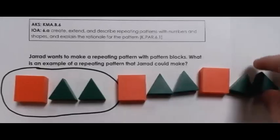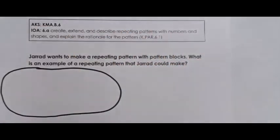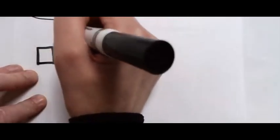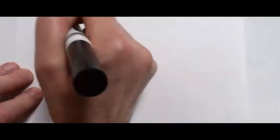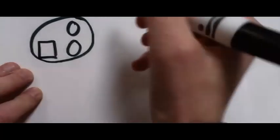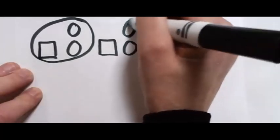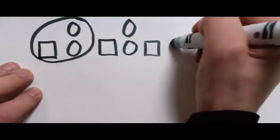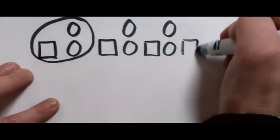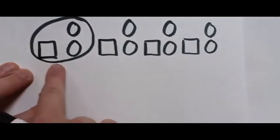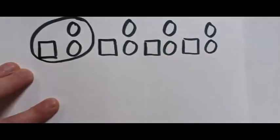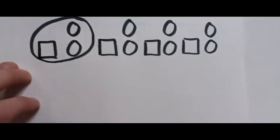The same problem can be solved at the representational level, where students draw the pattern. The same thinking applies: decide on a core first. For example, the core could be a square, a circle, and a circle. Draw the core, then repeat it — square, circle, circle — and repeat again. If the core repeats three times, that is a clear example of a repeating pattern students create at the representational level.